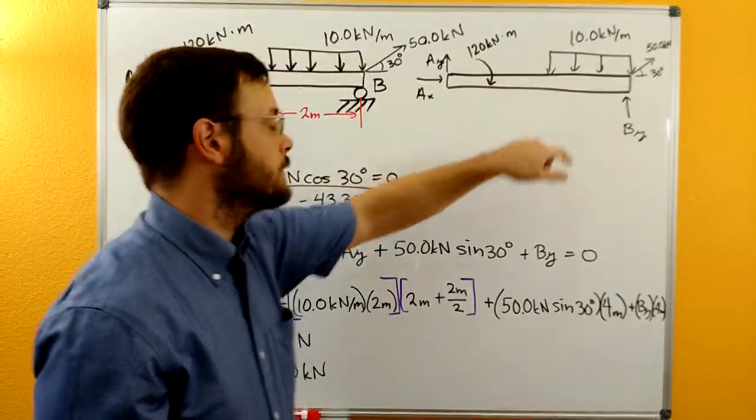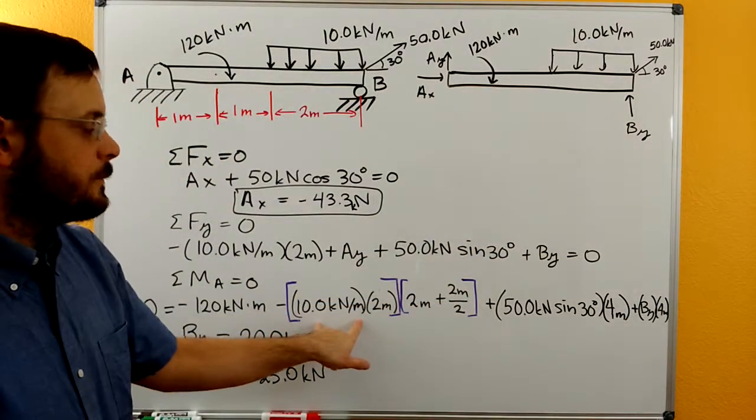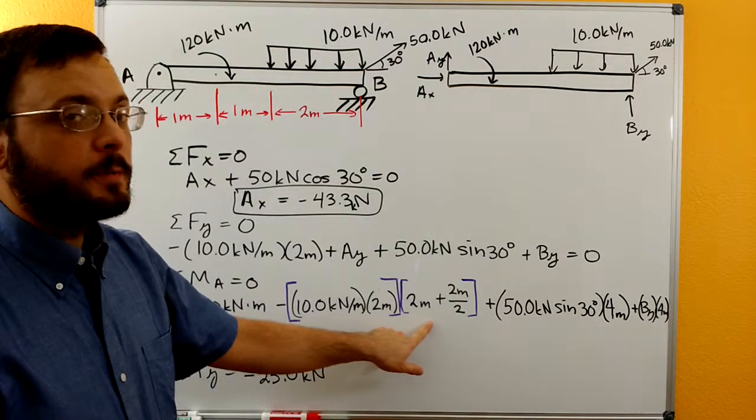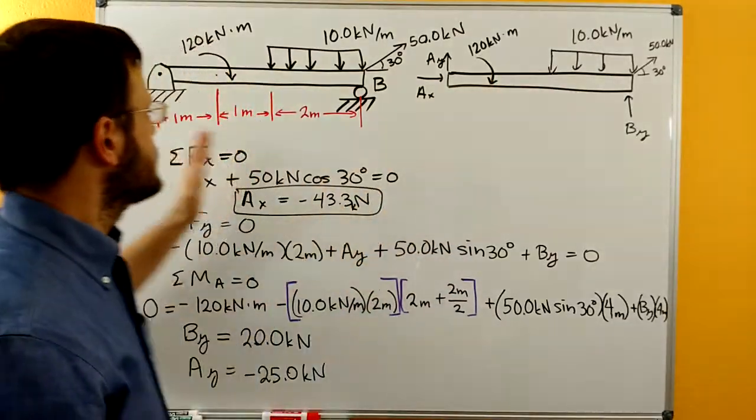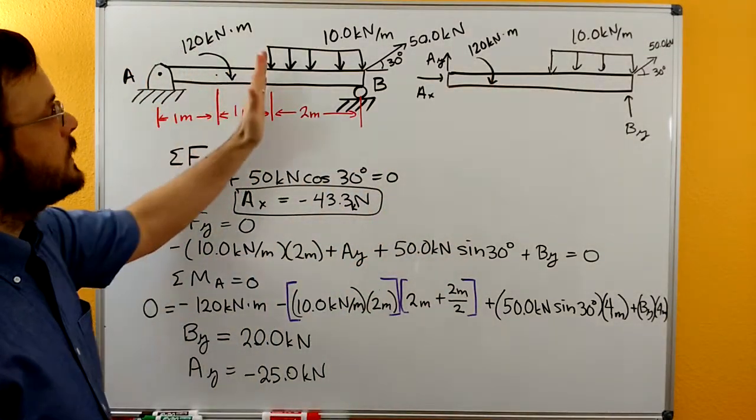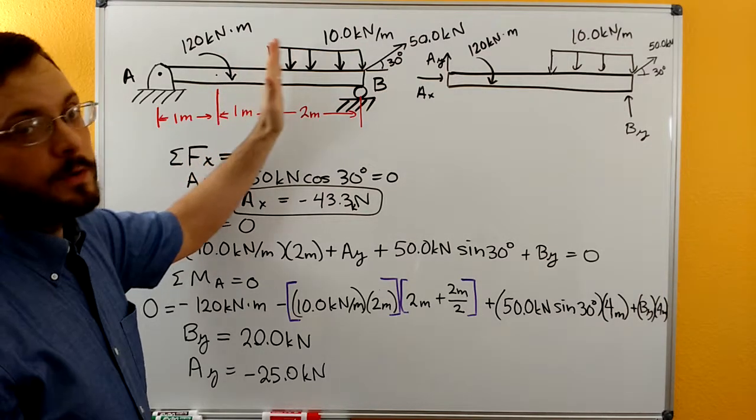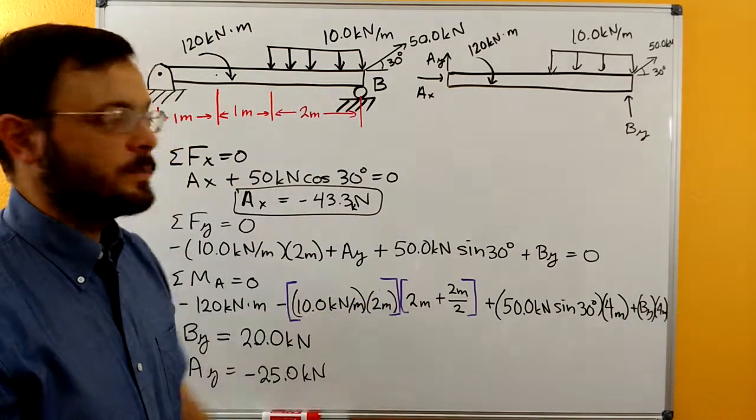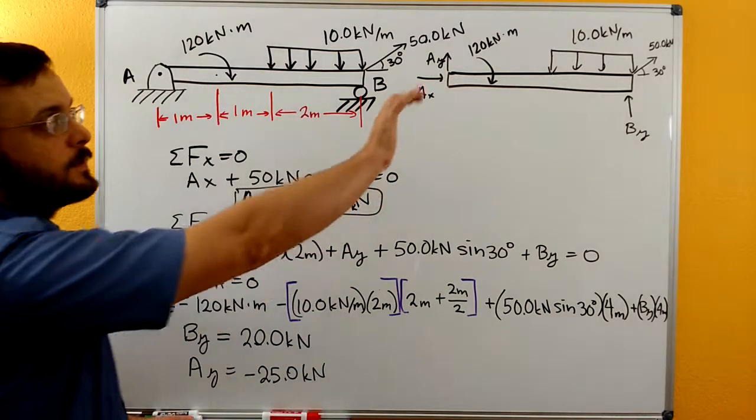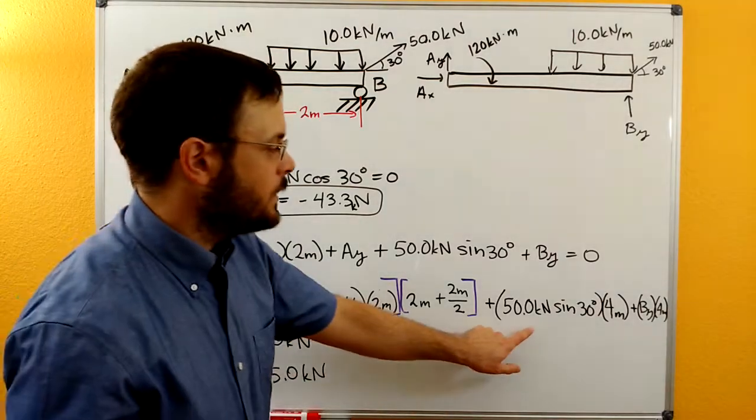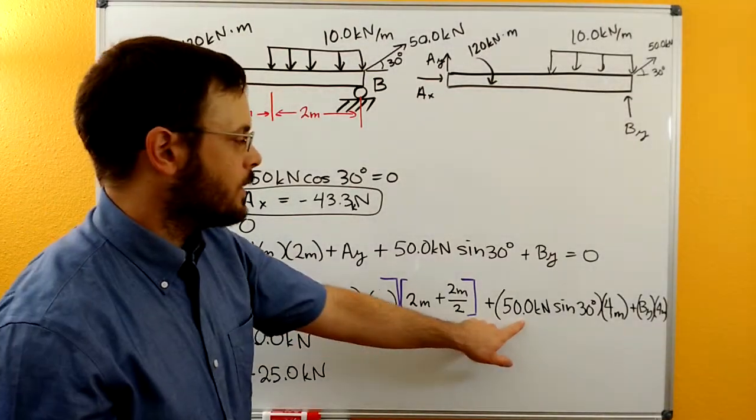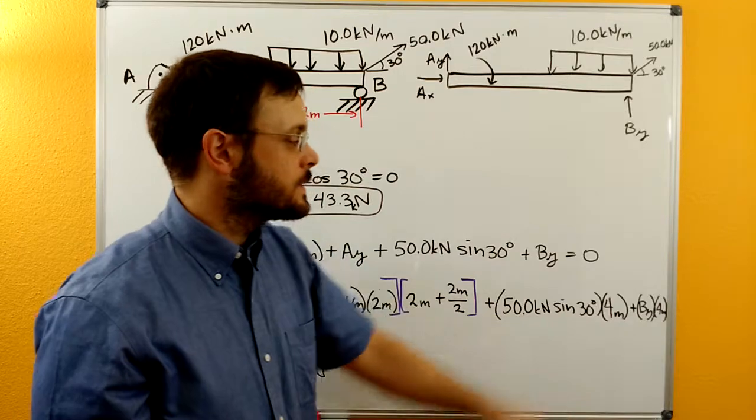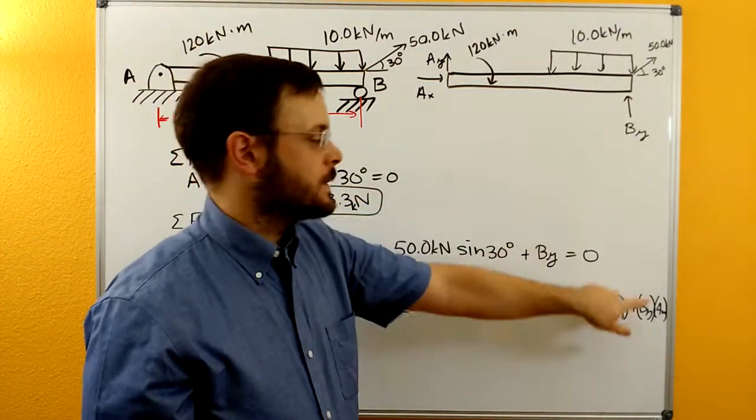Then we have our distributed load. And we have to do two things. We have to get the force from our distributed load. So 10 kilonewton per meter times 2 meters. Then we need to multiply by the distance back to A. So looking over here in our original diagram, it's two meters out to the distributed load. And then since it's a rectangle, it's going to be half of the way over to the centroid. So it's going to be two meters plus two meters divided by two. And that's going to be our distance for a moment. Now it's going to give us a negative moment about A. Then we have the moment created by the Y part of our 50 kilonewton applied force. So 50 kilonewtons times sine of 30 degrees times four meters. And then we have the moment created by BY. So BY times four.